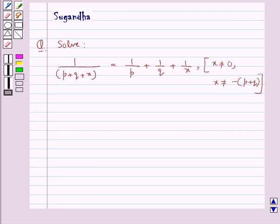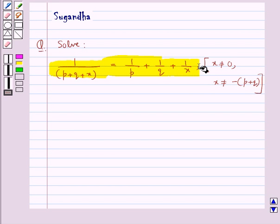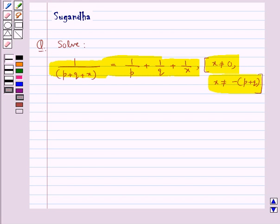Hello and welcome to the session. In this session we discuss the following question: Solve 1 upon p plus q plus x is equal to 1 upon p plus 1 upon q plus 1 upon x, where x is not equal to 0 and x is not equal to minus of p plus q. So we need to find the value of x. Let's see the solution.